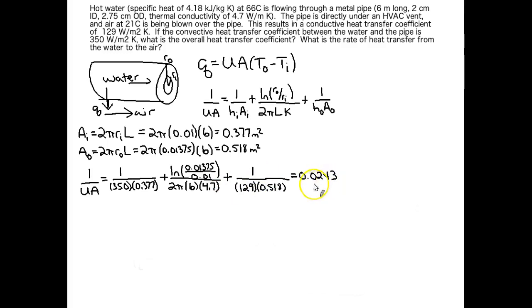When we crunch through all those numbers, we find out that 1 over UA is 0.0243. And that means if we take the reciprocal of that and solve for UA, this is what we get. Alright, UA is 41.1 watts per Kelvin.